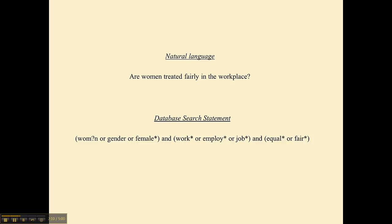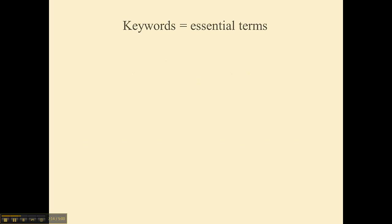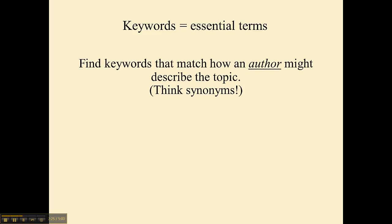So there are ways to get here, and I'm going to show you every one of them — we are going to get here. First of all, keywords are simply essential terms. What word or words have to be there in order for the article to be relevant? I'm also trying to think: how might an author express this? As you saw in those three articles, you have no idea which words an author is going to use and in which combinations.